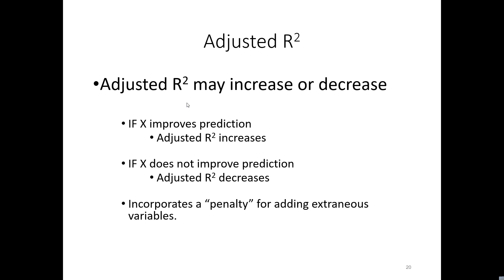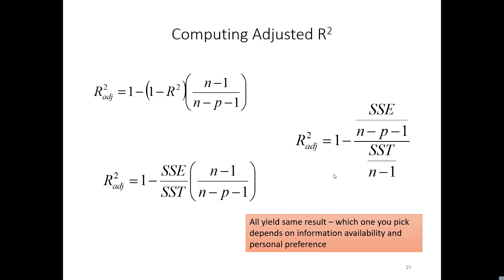There are three different formulas for adjusted R-squared — they'll all get you the same result. Which one you pick depends on how you're calculating it. The very first one is: adjusted R-squared equals one minus, in brackets, (one minus R-squared), multiplied by (n minus one) divided by (n minus p minus one).